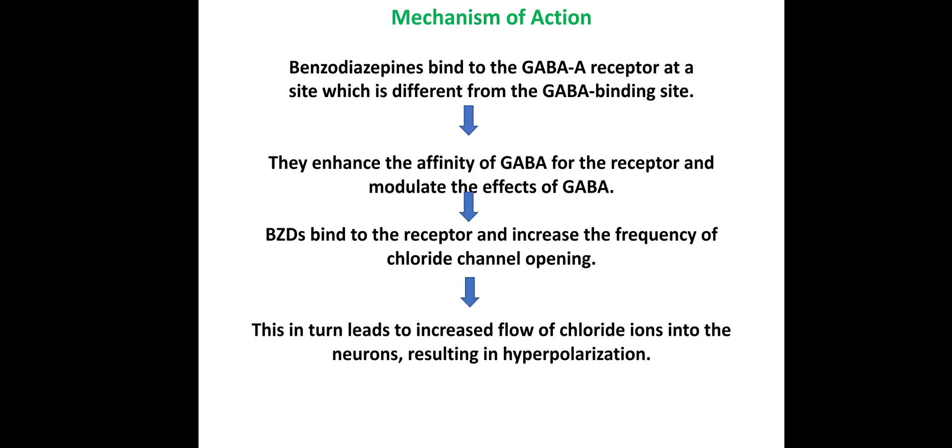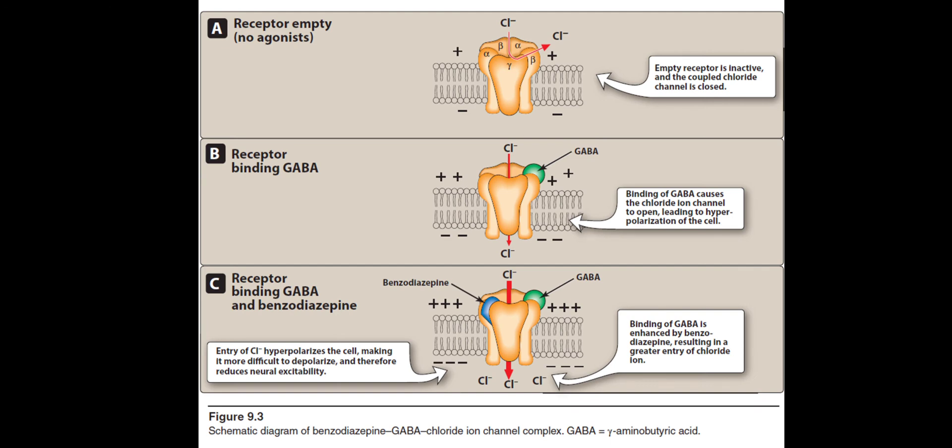The binding of GABA to its receptor triggers the opening of the central ion channel, allowing chloride ions to flow through the pore. In the diagram, in state A the chloride ions are outside. In state B, GABA binds and the central ion channel opens.